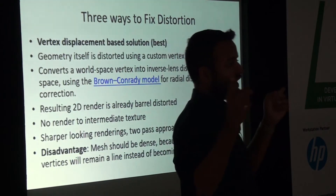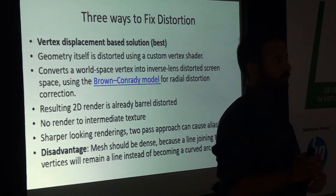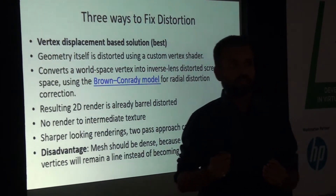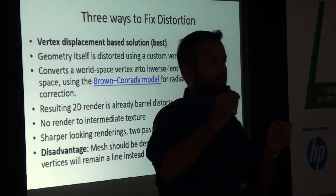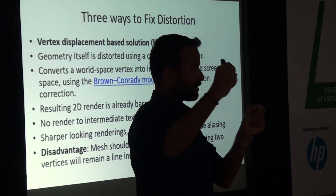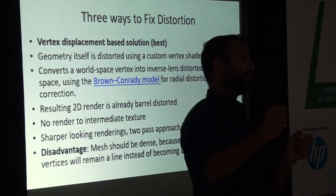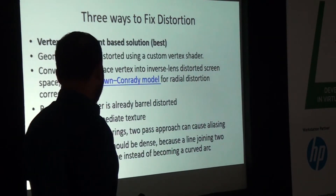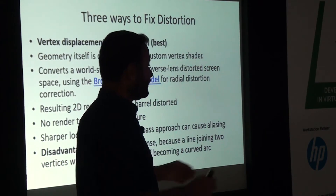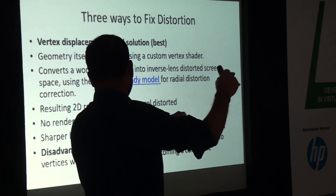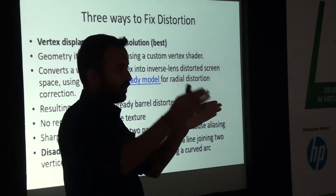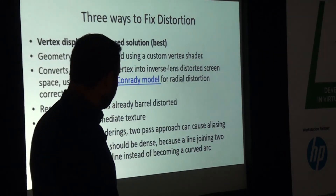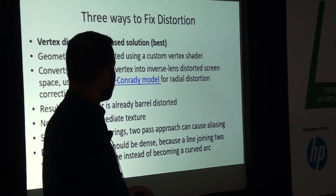A disadvantage is that the mesh must be dense. With affine transformations — where a line remains a line after transformation — if the mesh is too sparse, the line joining two vertices won't get distorted and will still appear as a straight line rather than a curve. So for the vertex displacement method to work well, the mesh must be sufficiently dense.